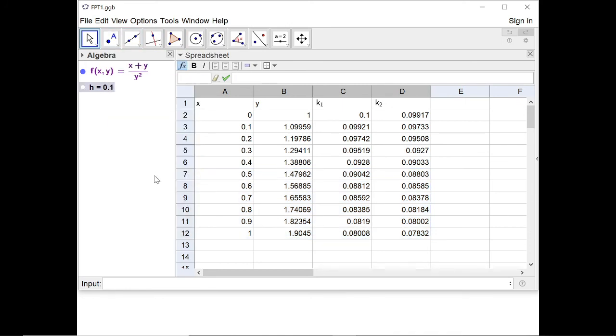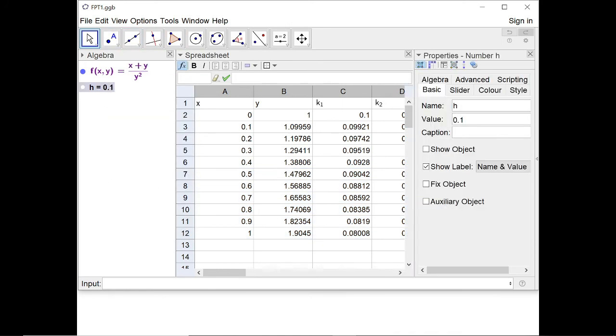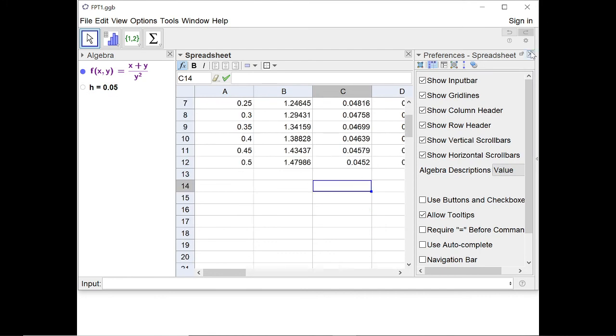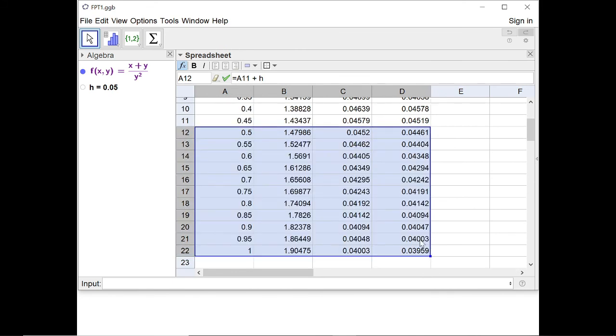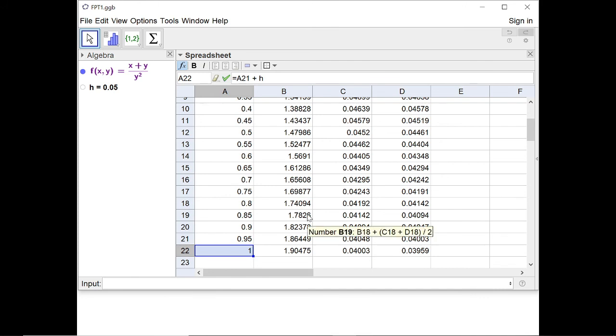And then I can edit it again. So when h equals 0.05, I can fill these values down. So when x is 1, y is 1.90475. So it looks as if it's starting to converge on some value around about 1.905 or so.